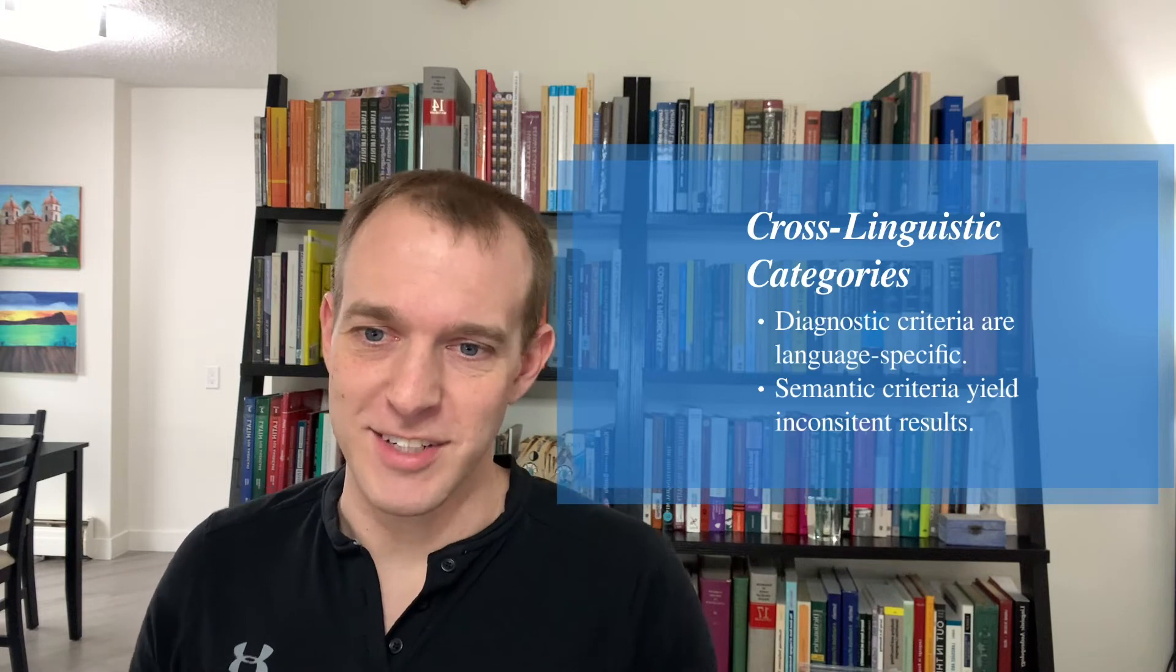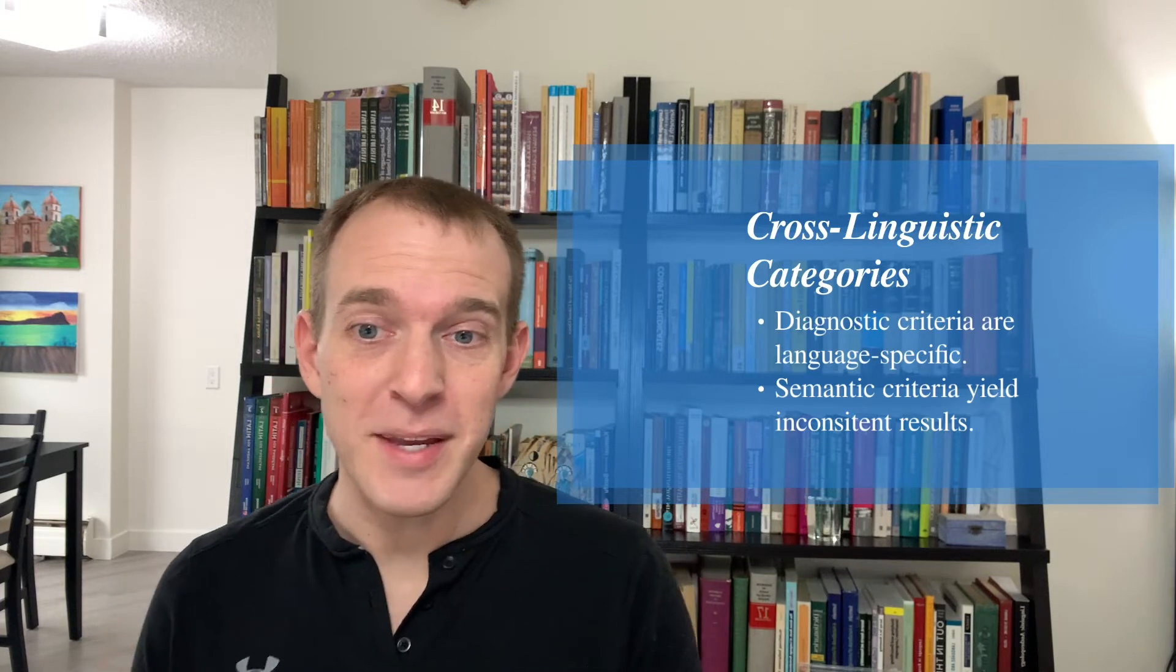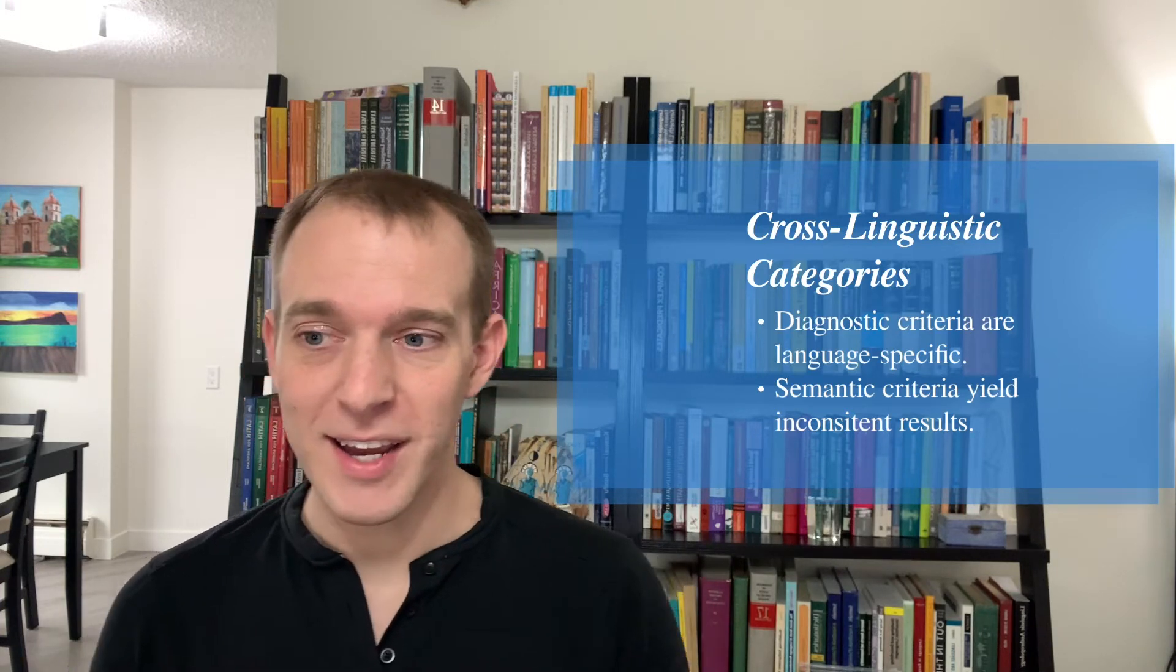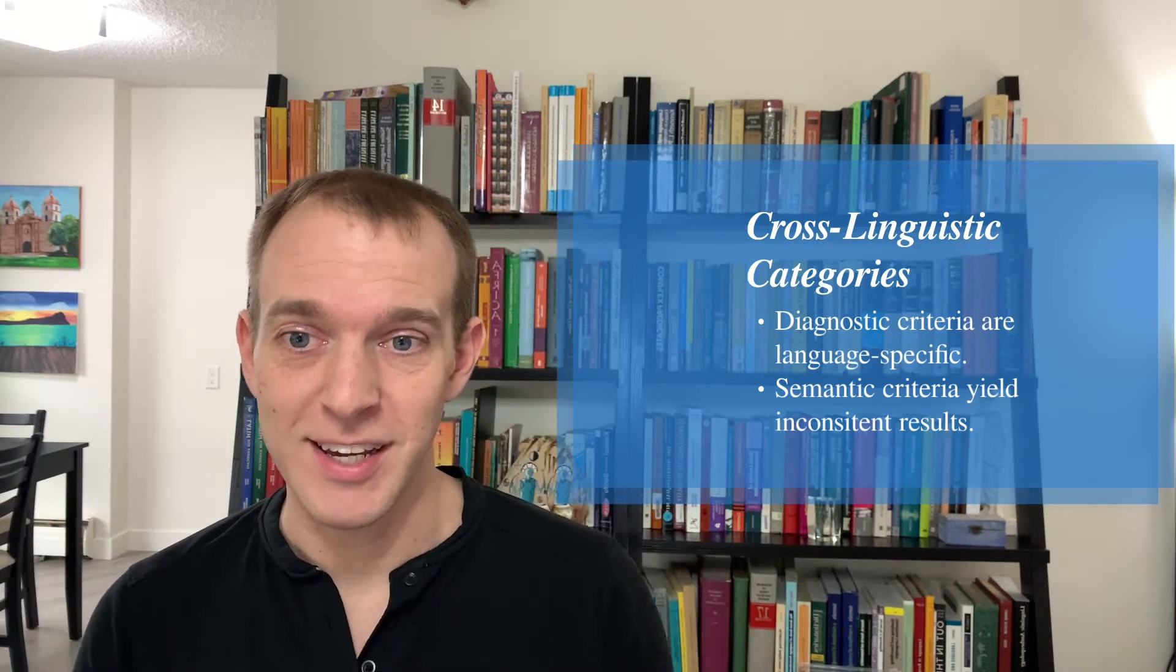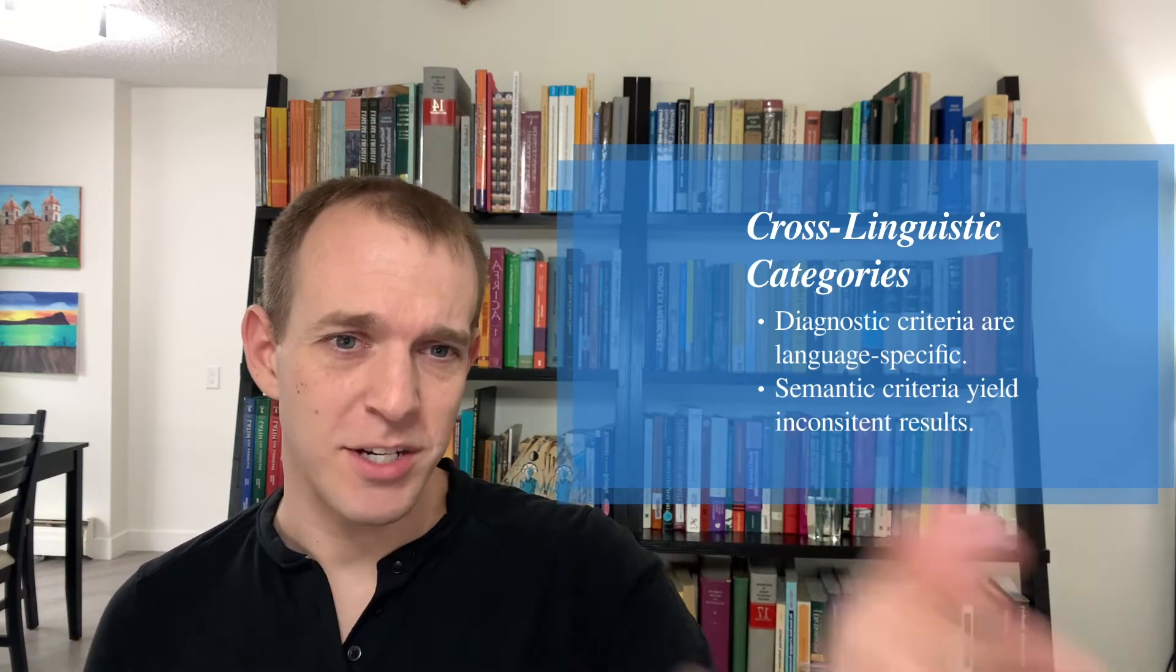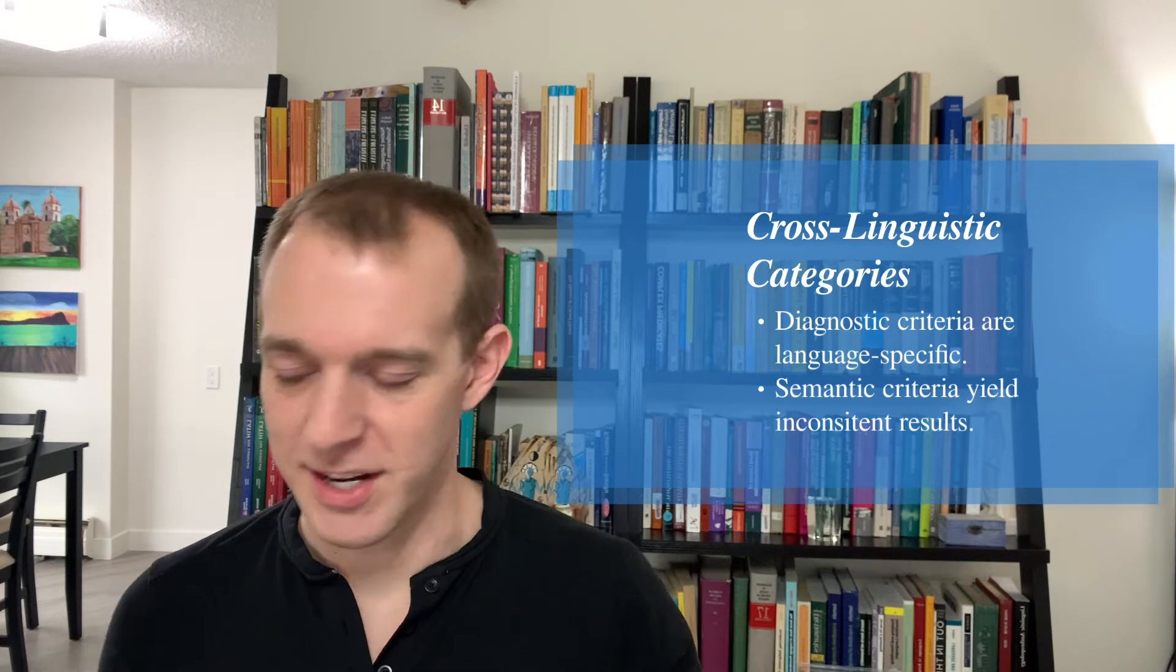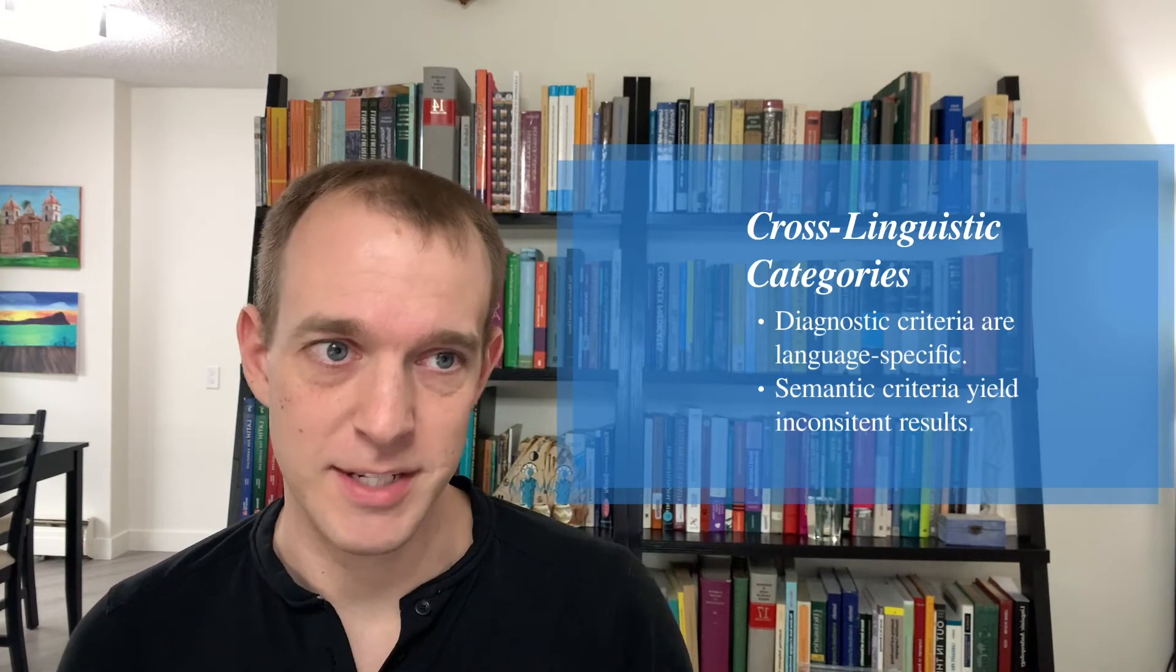plurality is something that gets marked on verbs too. And it's not just plurality of the participants. It's not like plural subject, plural object. Verbs can have what are called event number, often talked about as pluractionality. And so you can have a plural marker on the verb, which means that the event happened multiple times. So you can begin to immediately see why applying these criteria cross-linguistically is so difficult. And we already talked about some of the semantic criteria and how difficult that makes this cross-linguistic identification.